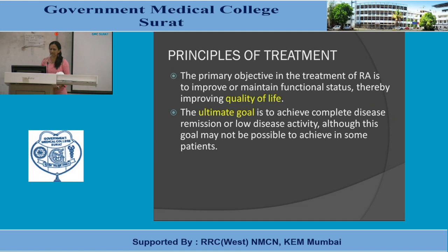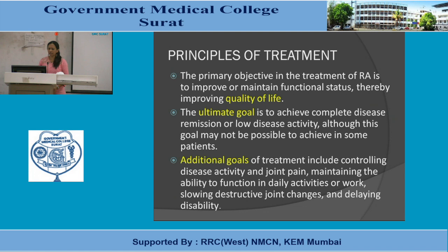The ultimate goal is to achieve complete disease remission or low disease activity, although this may not be possible in some patients. Additional goals include controlling disease activity and joint pain, maintaining the ability to function in daily activities, slowing destructive joint changes, and delaying disability as long as possible.